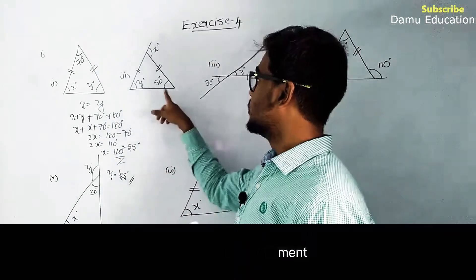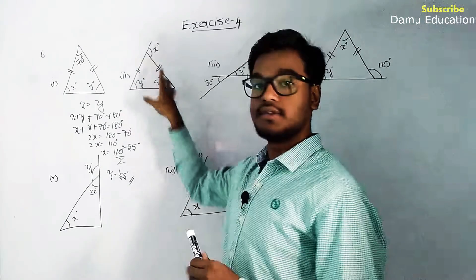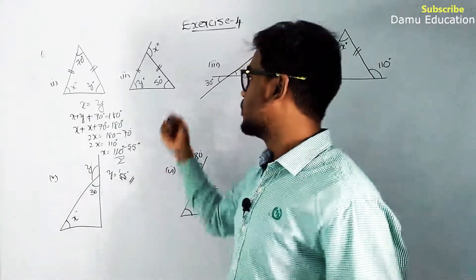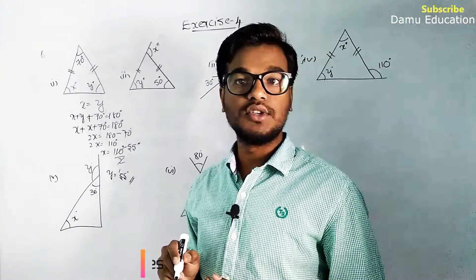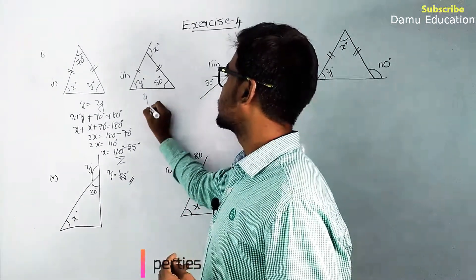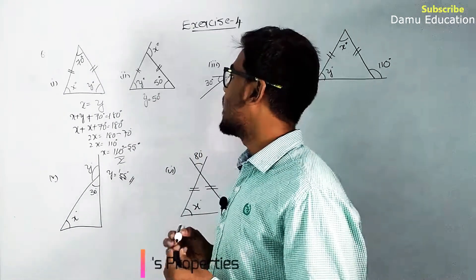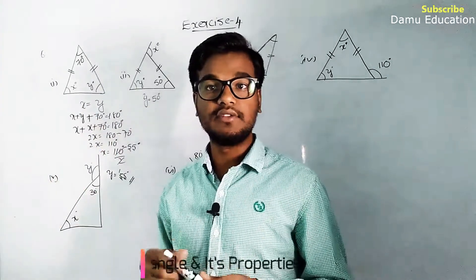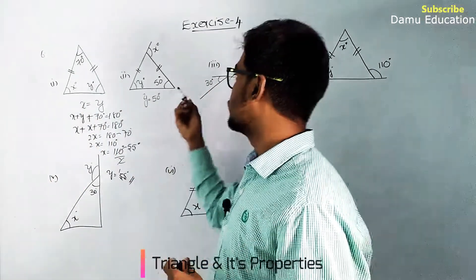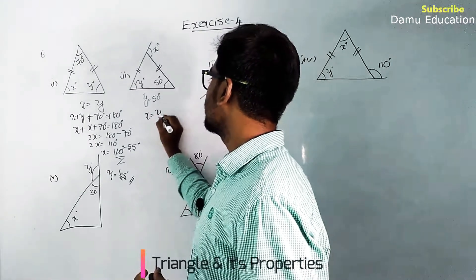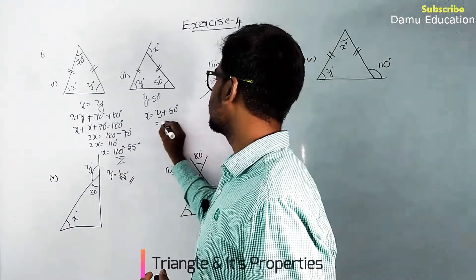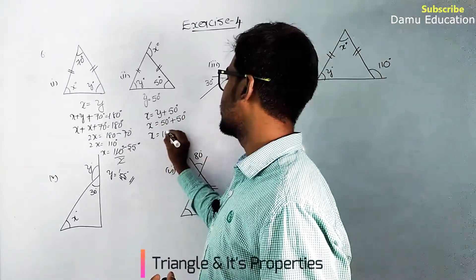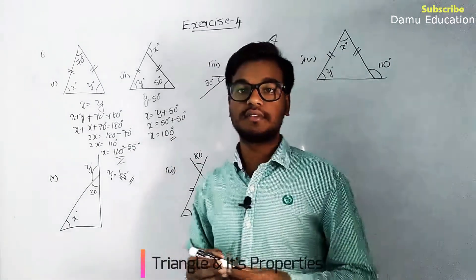For the second question, two sides are again marked equal, and y = 50°. Since the opposite angles of equal sides are equal, the other base angle is also 50°. Using the exterior angle property, x equals y plus 50°, so x = 50 + 50 = 100°. Therefore y = 50° and x = 100°.